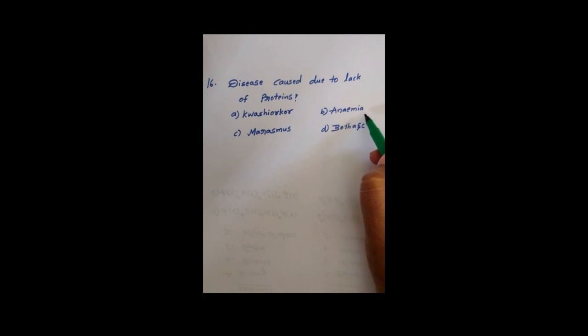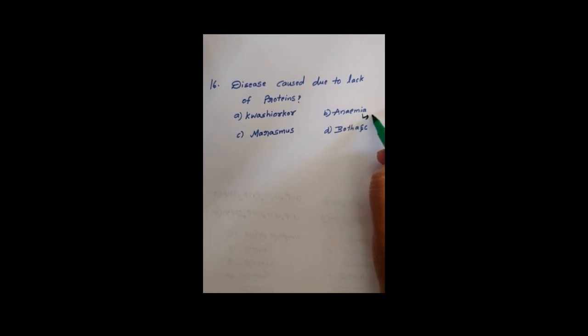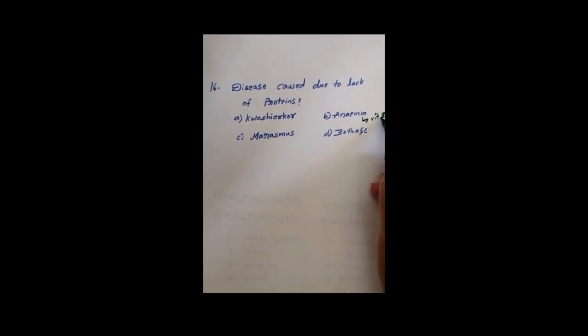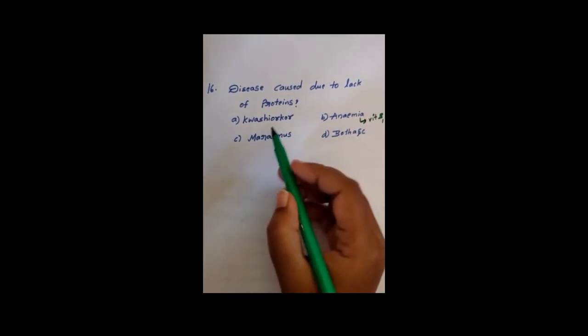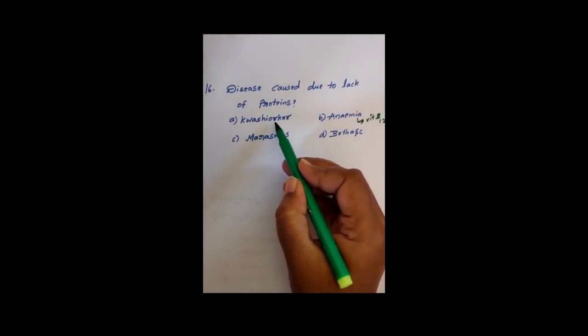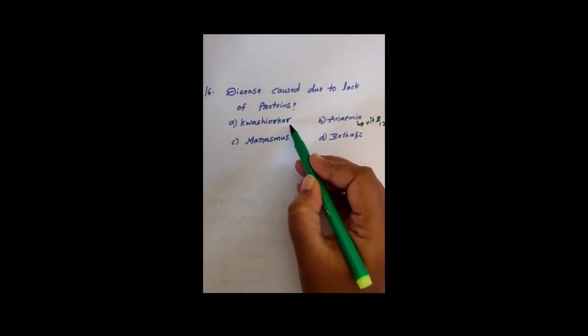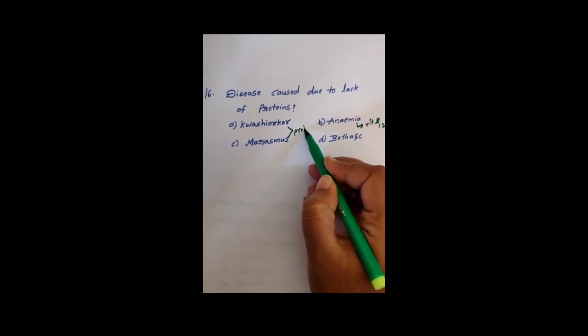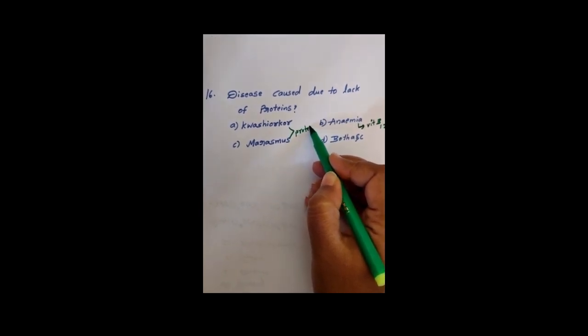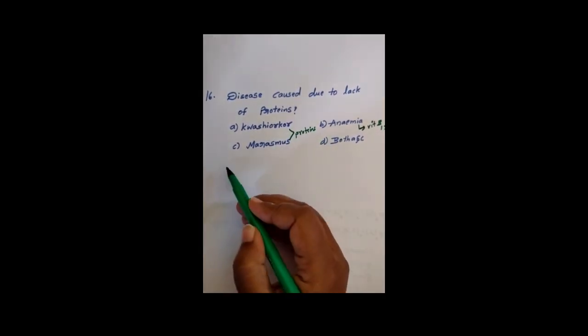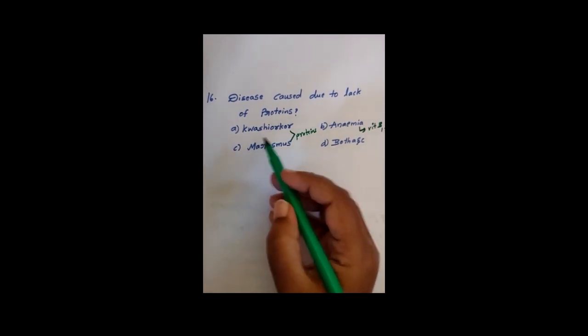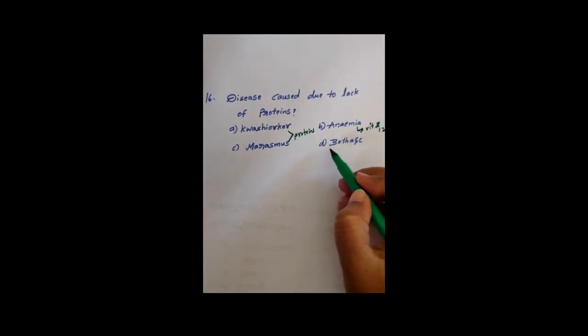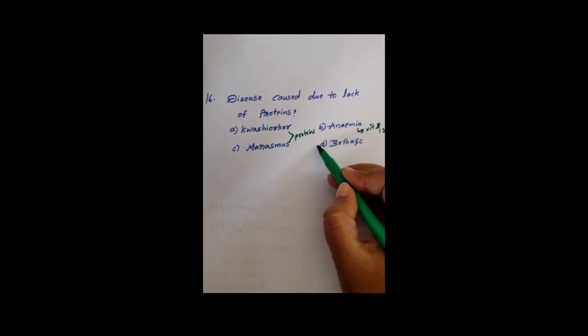Anemia is the deficiency of vitamin B12, that is cyanocobalamin. Kwashiorkor and Marasmus are both deficiency of proteins. So the right option is both A and C, meaning the correct option is D.